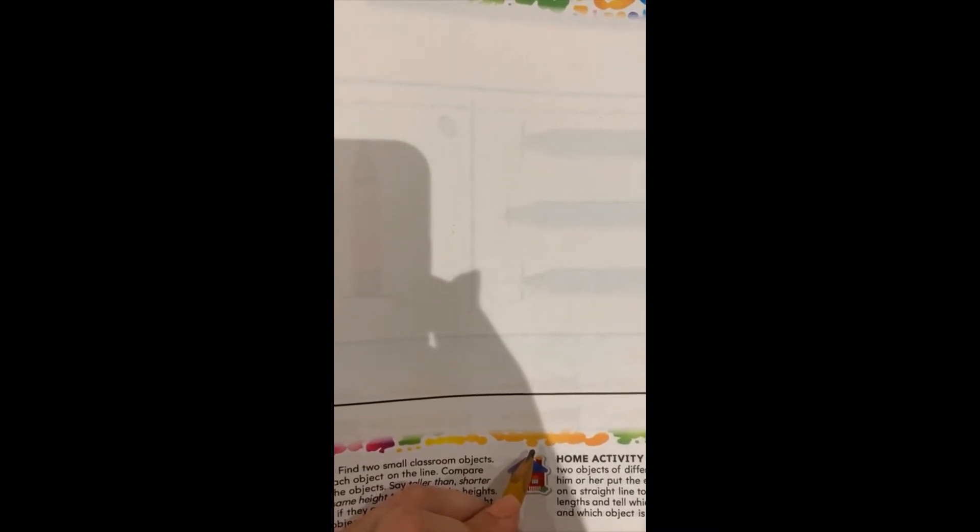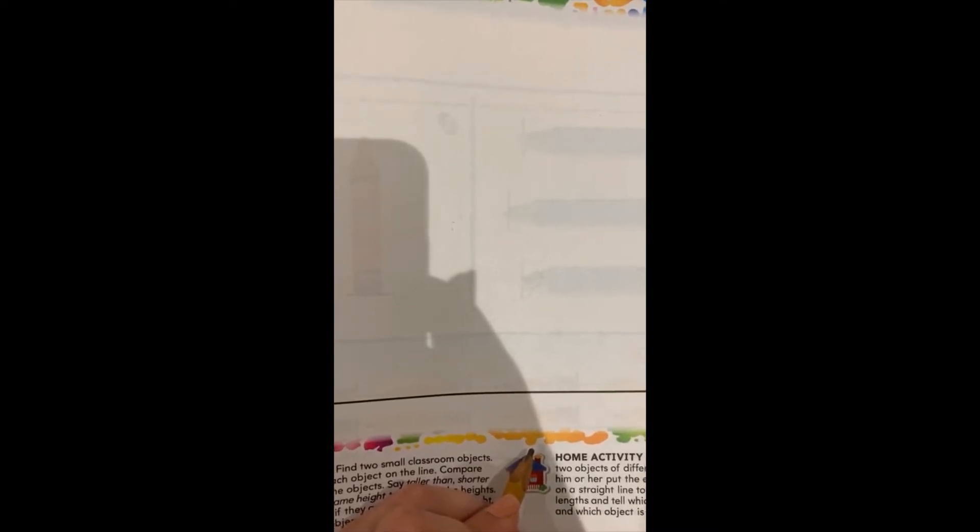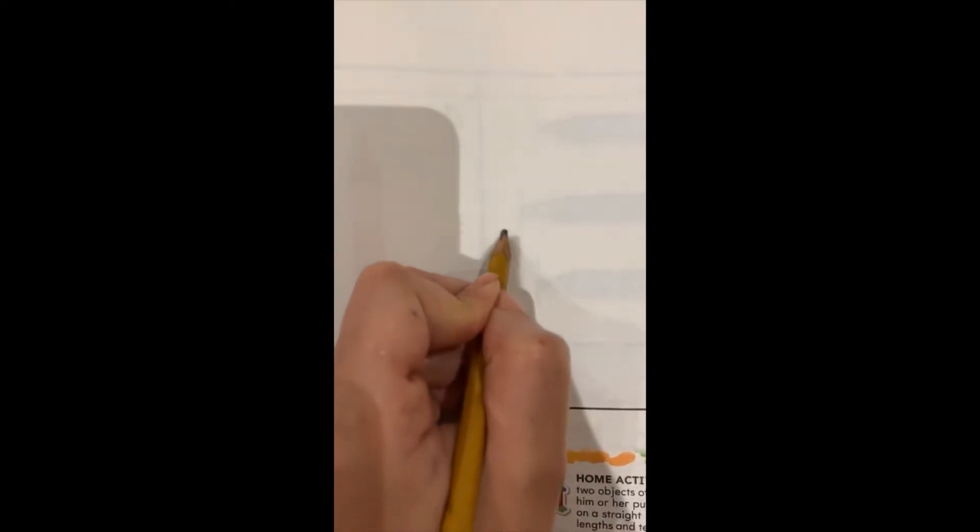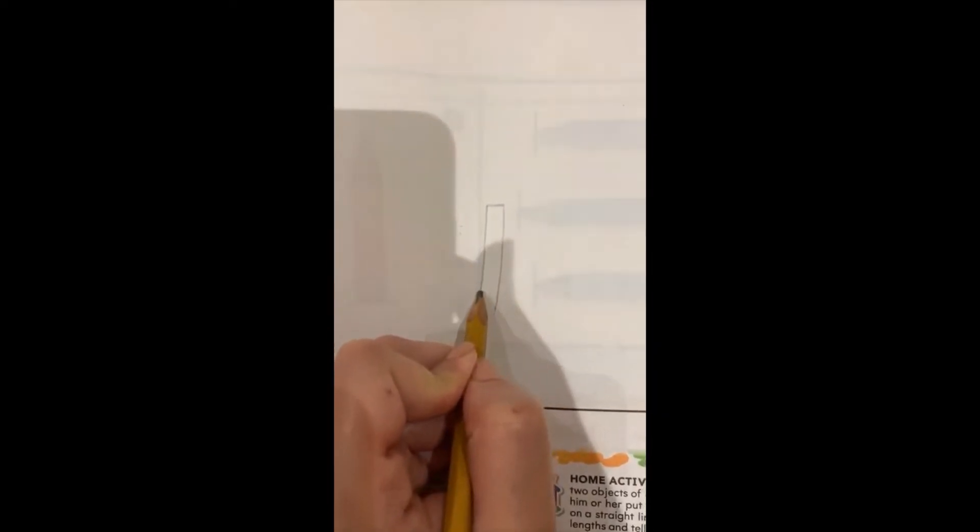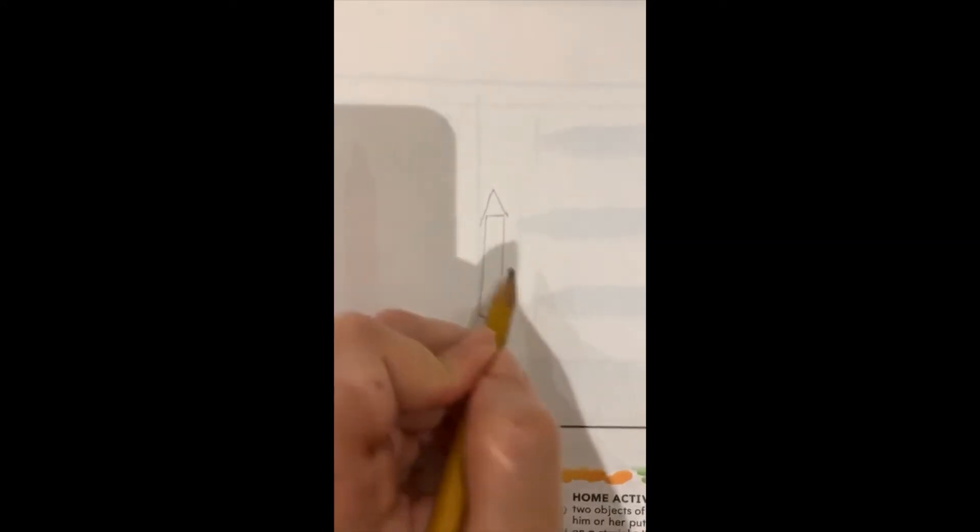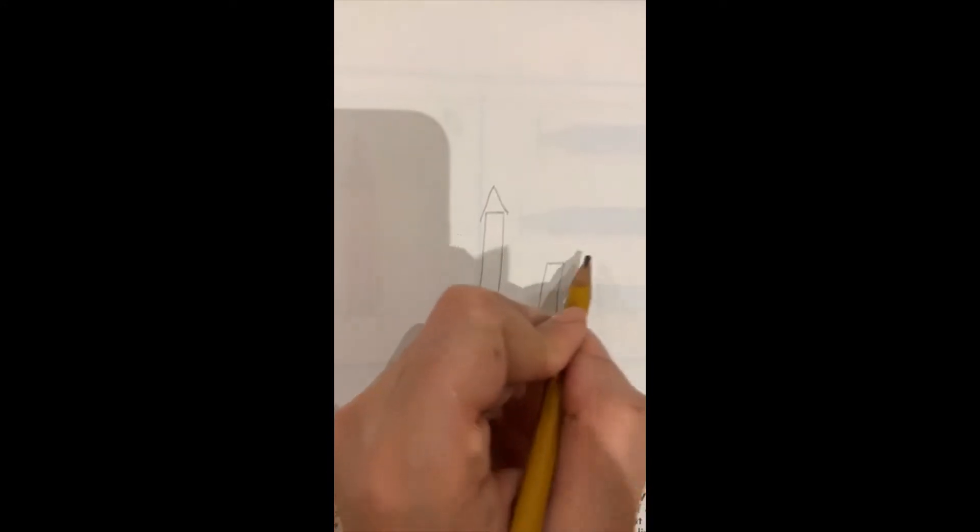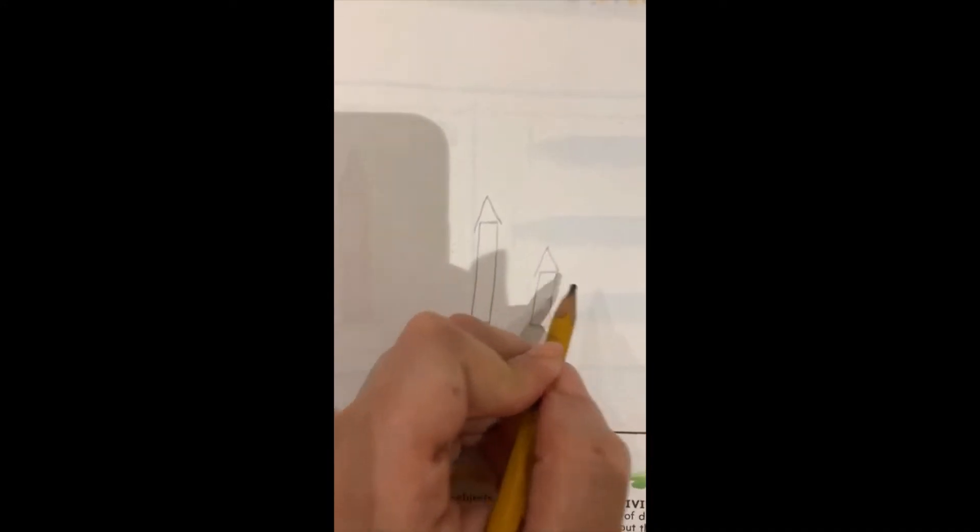Let's go to the next page. And also here, I want you to draw two small classroom objects that have different heights or about the same height. For example, I will draw crayons.